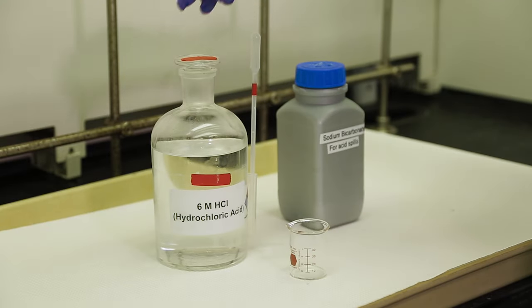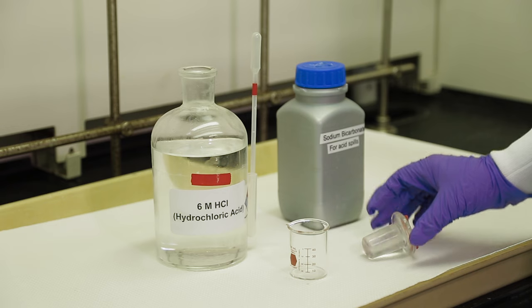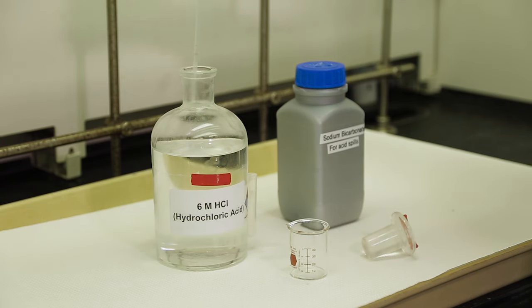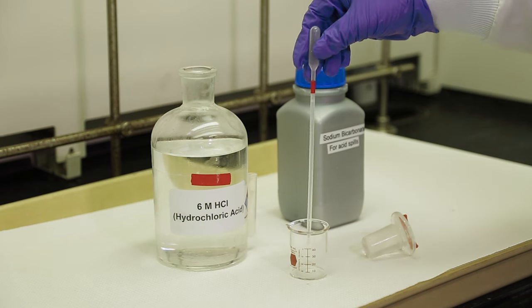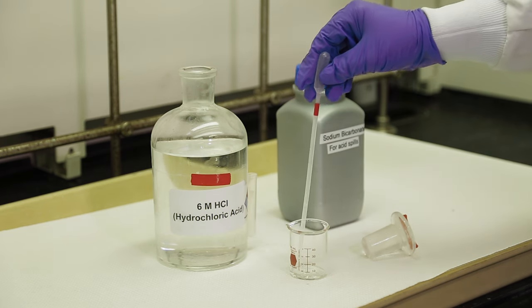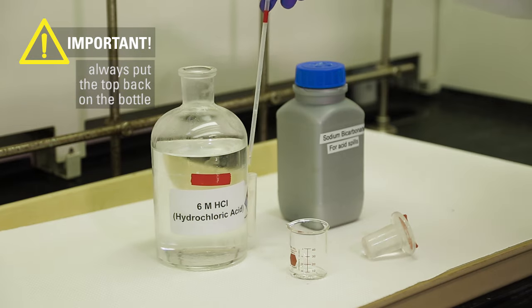When receiving chemicals, always keep the stock bottles under the main hood and use the transfer tools placed there for you. You use either a glass pipette or a plastic pipette depending on the solution. When you have completed transferring the material, always put the top back on the bottle.